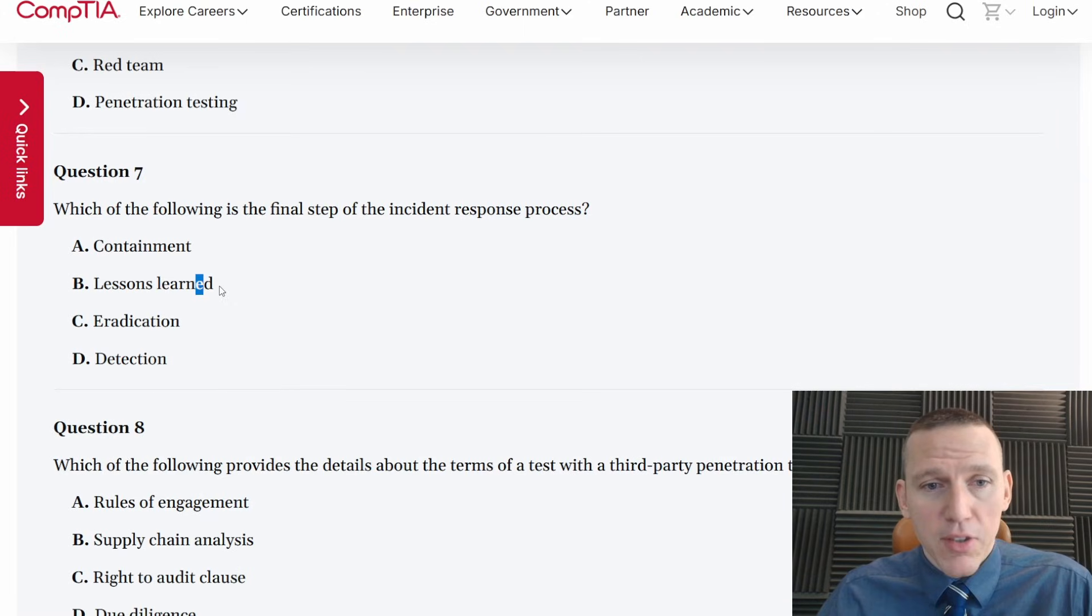Containment, lessons learned, eradication, detection. So detection is first, lessons learned is last. So it's the final step is lessons learned. So containment you would contain before you would eradicate. The order here is detect, contain, eradicate, lessons learned. It's not asking us for the order. It's asking us for the final step, which is always lessons learned. And that comes a lot from the military. You always do a lessons learned section to say sustains and improves. You get everybody in a circle. You start talking, you ask questions. What worked well? What didn't work well? And everybody can contribute. That's usually how it should go. You want to get feedback from every level of the organization. And then you want to document it.